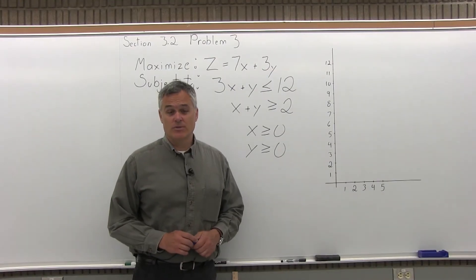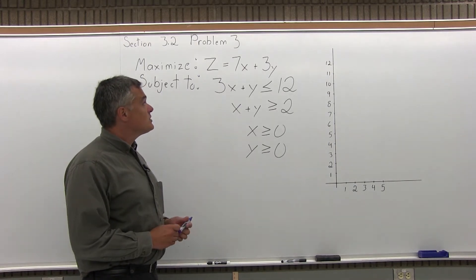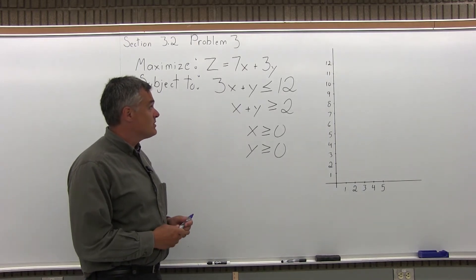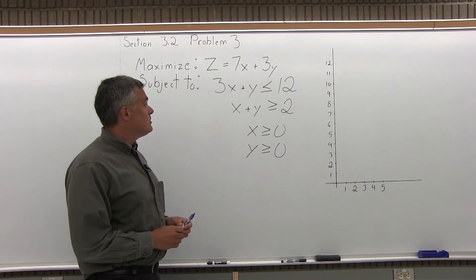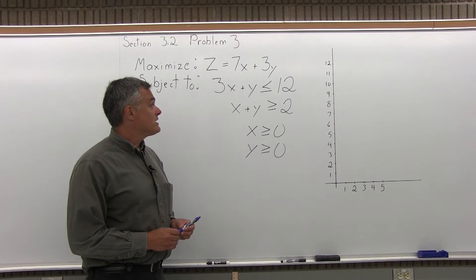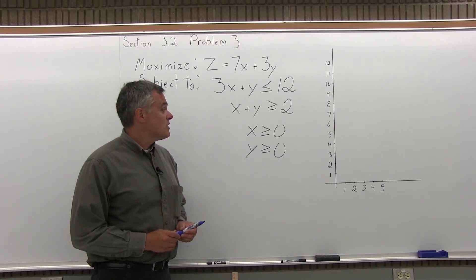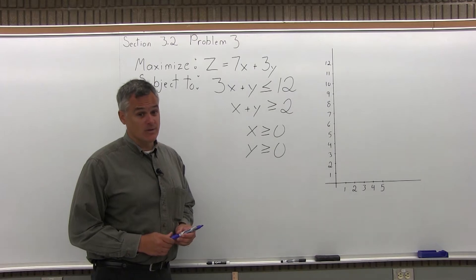This is question number 3 from Section 3.2. It says maximize z equals 7x plus 3y, subject to 3x plus y is less than or equal to 12, x plus y is greater than or equal to 2, x is greater than or equal to 0, y is greater than or equal to 0.